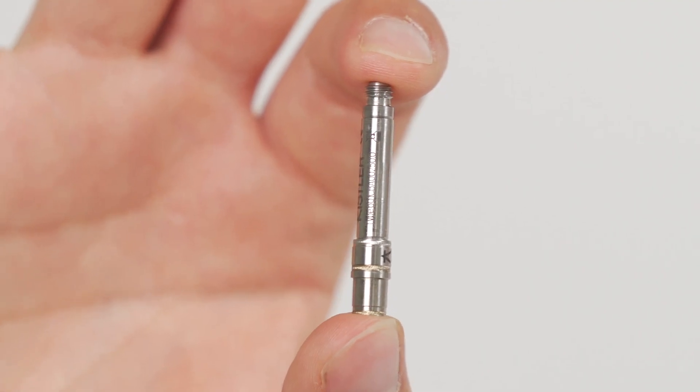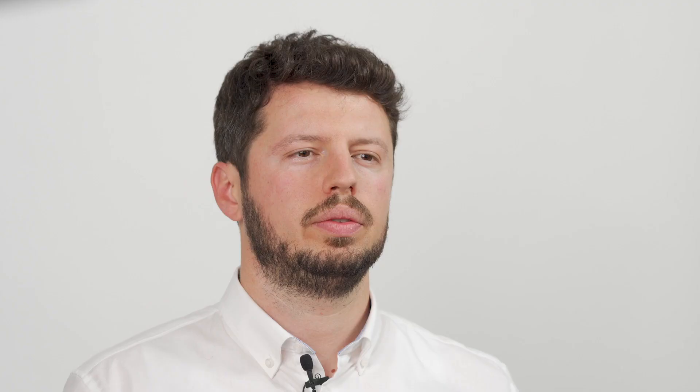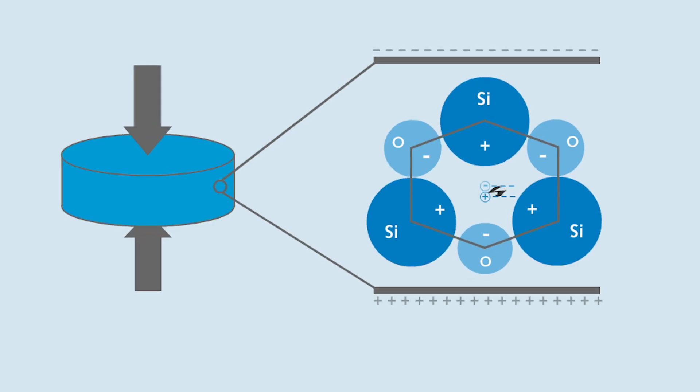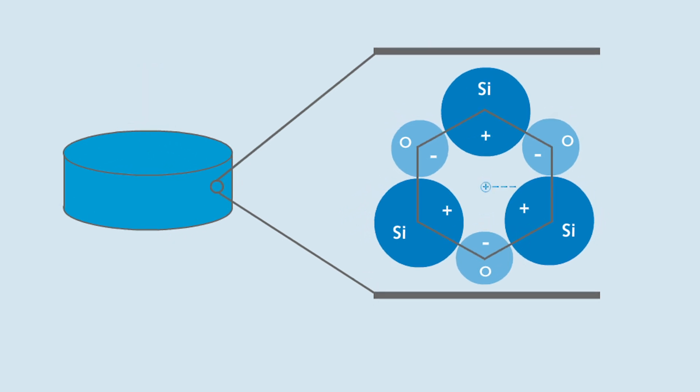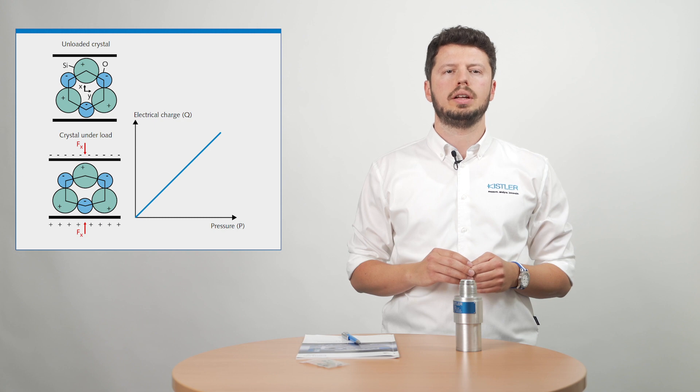Here we can see a piezoelectric pressure sensor. The core material of this sensor is a crystal, such as quartz. Crystals have the property that they generate an electrical charge under mechanical stress. The generated charge is proportional to the applied force or pressure. This effect is commonly known as the piezoelectric effect.